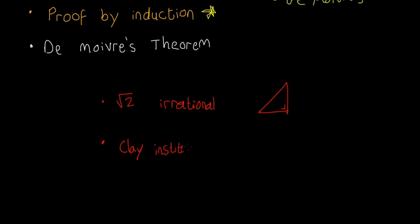There are six problems at the Clay Institute - if you guys want to look it up - six problems, and if you solve any of these problems they'll give you one million dollars. One person actually did solve one of the problems - there were seven, now there are only six - and he turned down the money.